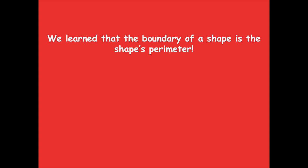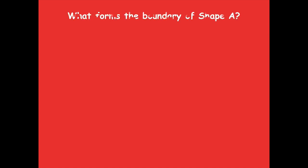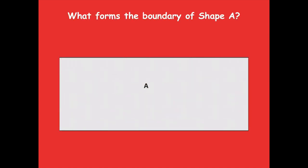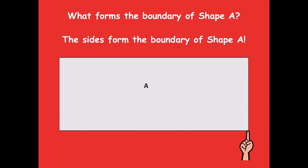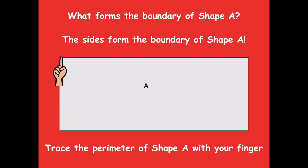In the previous lessons, we've learned that the boundary of a shape is called the shape's perimeter — that's the outside part, what you would trace. So what forms the boundary of shape A? The sides form the boundary of shape A. I can trace that with my finger, going all the way around. So this is the perimeter.